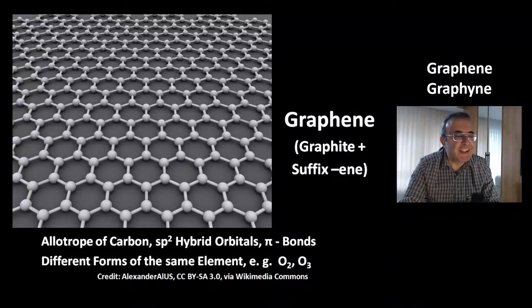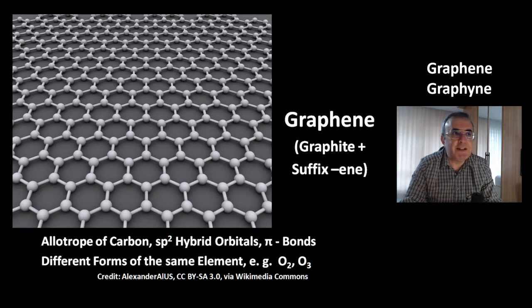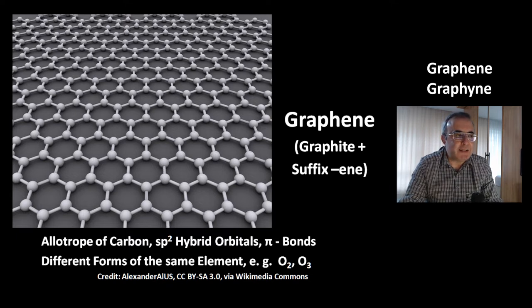Hi, my name is Octay. Today's video is about graphene, which is an allotrope of carbon. The name comes from graphite and the suffix "-ine". The suffix "-ine" comes from aromatic compounds like benzene and toluene. And graphene has sp2 hybrid orbitals with pi bonds.